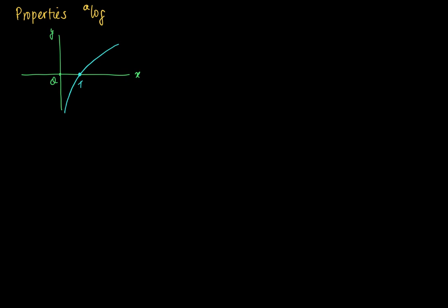From this observation, I can retrieve a lot of properties of this inverse function a log. For instance, a log of 1 equals 0, because (0, 1) is on the graph of a^x, so (1, 0) is on the graph of a log. So if I plug in 1, a log of 1 equals 0. And why is that? Just because a to the power 0 equals 1. Similarly, since (1, a) is on the graph of a^x, then (a, 1) is on the graph of a log. So a log of a equals 1, since a to the power 1 equals a.